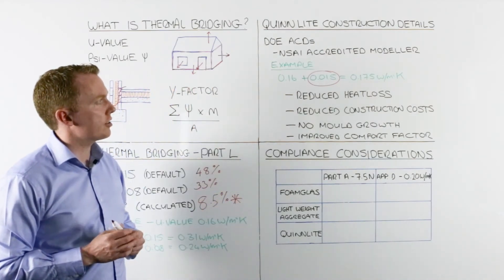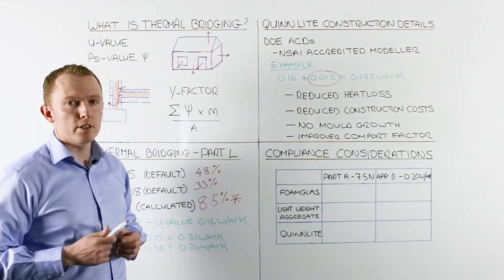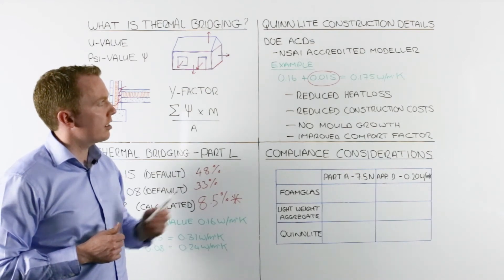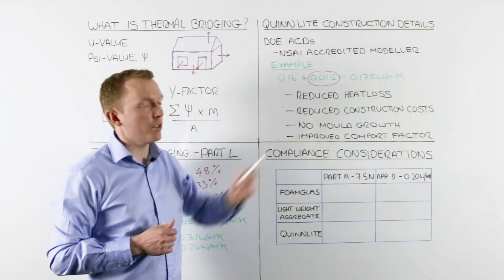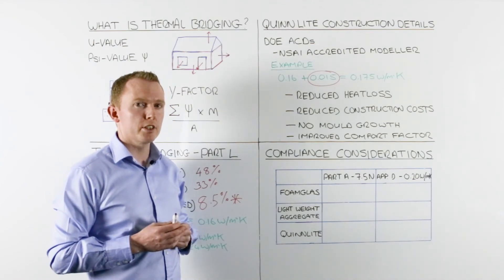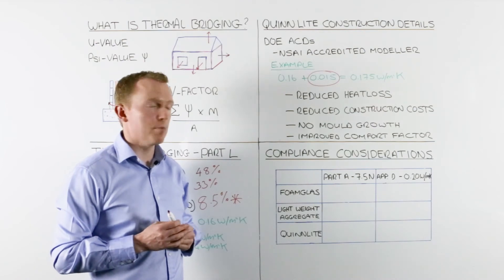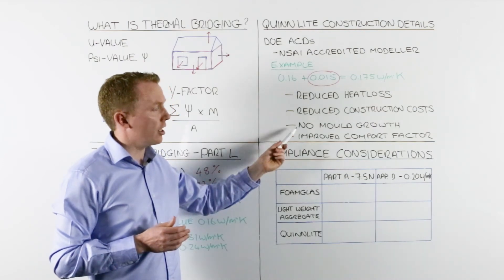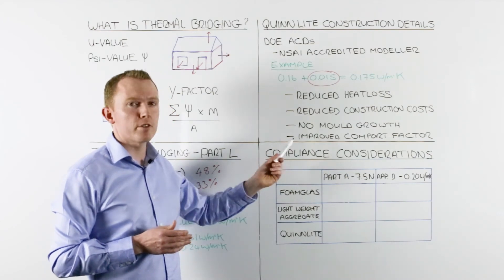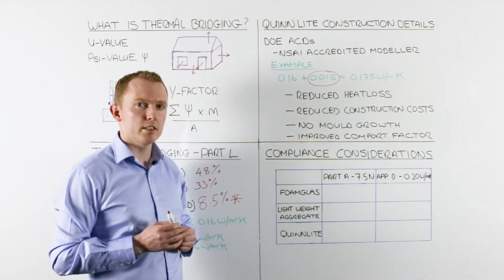As well as reducing heat loss, which results in long-term savings in energy bills, improving your thermal bridges also reduces your construction costs. And because of higher surface temperatures at junctions, we also eliminate the risk of mold growth and improve the comfort factor of our dwellings as well.